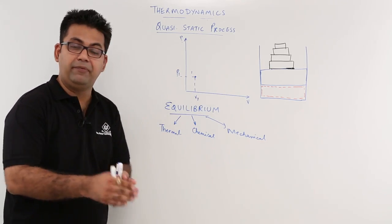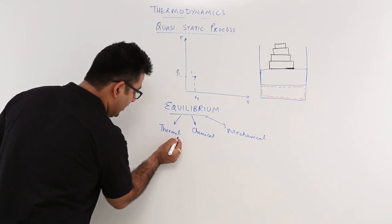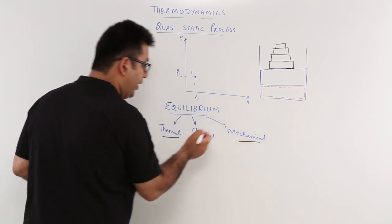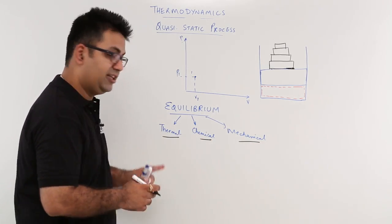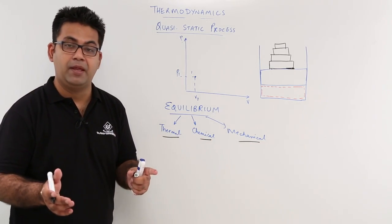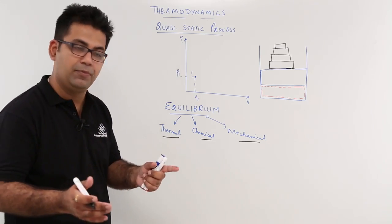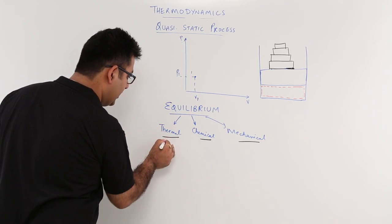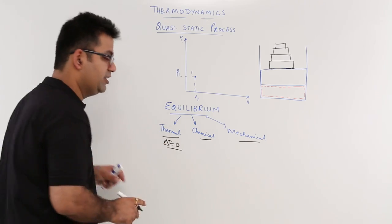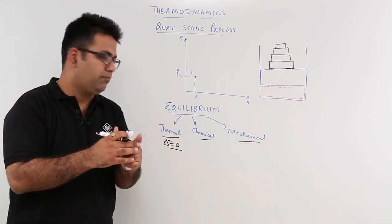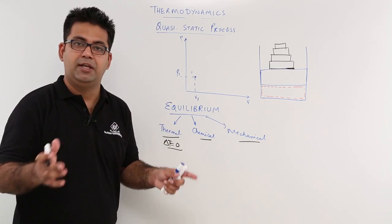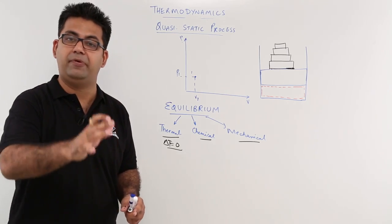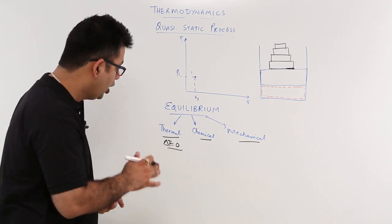There are three kinds of equilibrium we need to know. The first kind is thermal equilibrium, the second is chemical equilibrium, and the third is mechanical equilibrium. Thermal equilibrium means that the temperature difference between two bodies is zero — both bodies, or any number of bodies, are all at the same temperature. So delta T is zero; there is no temperature difference between the bodies or between the systems.